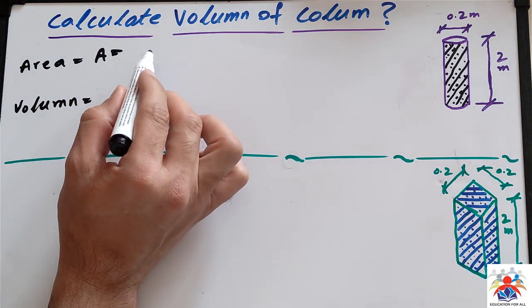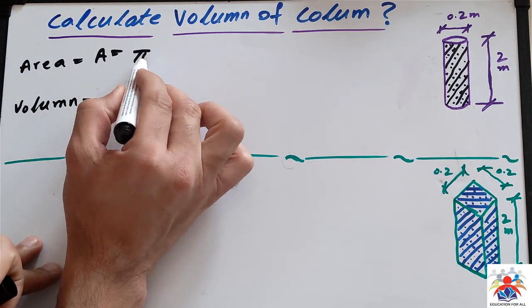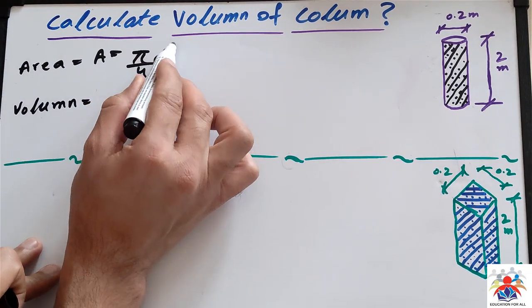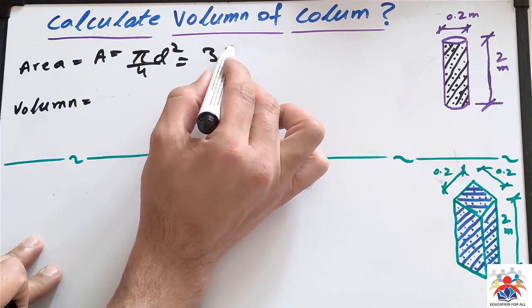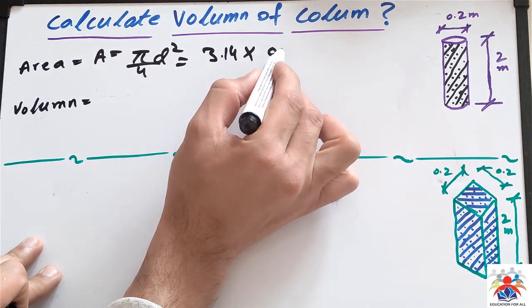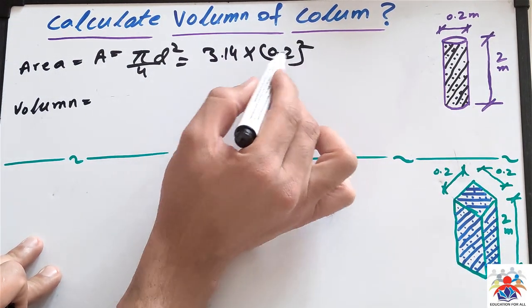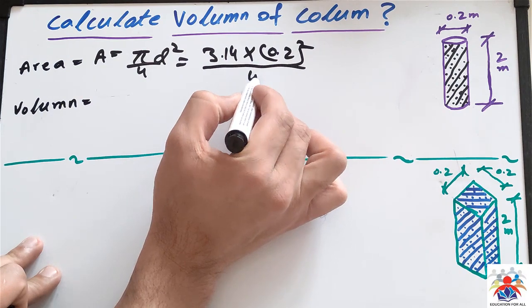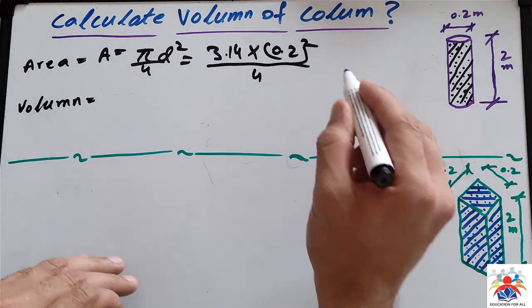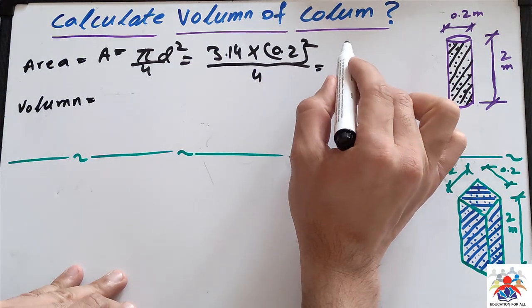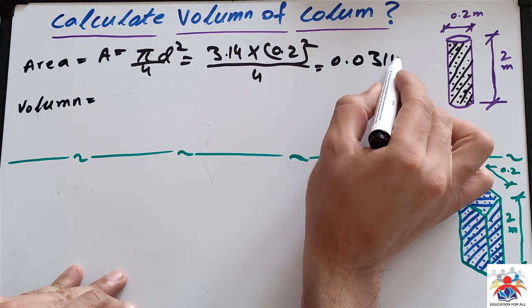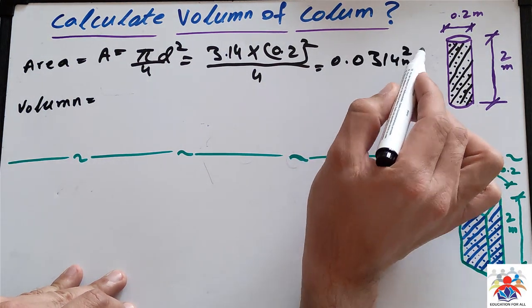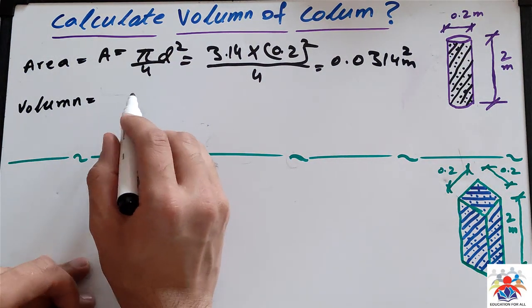The formula for the area is π/4 × d², which in our case is 3.14 × 0.2² ÷ 4, and we get the answer 0.0314 m². Now we will calculate the volume.